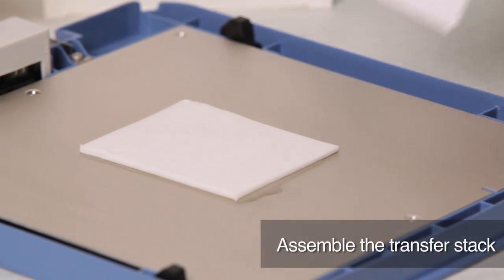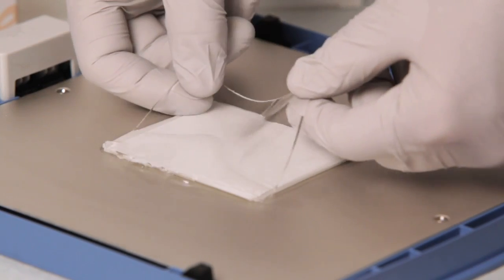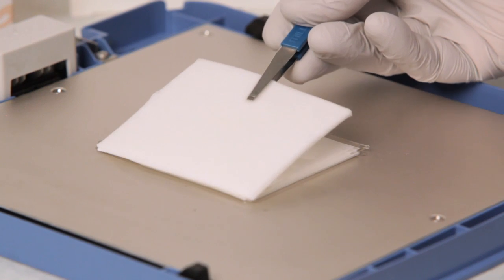The transfer stack is assembled on the anode using two pieces of pre-equilibrated filter paper, the membrane, the gel, and another two pieces of filter paper.